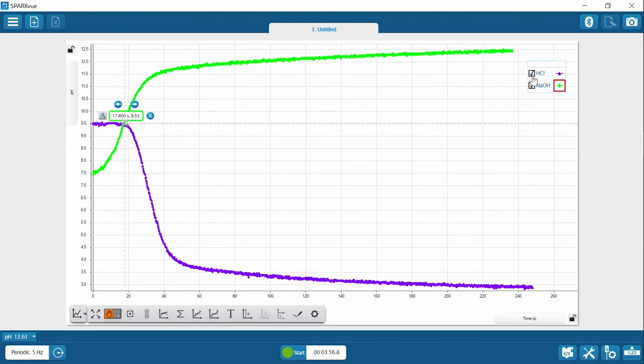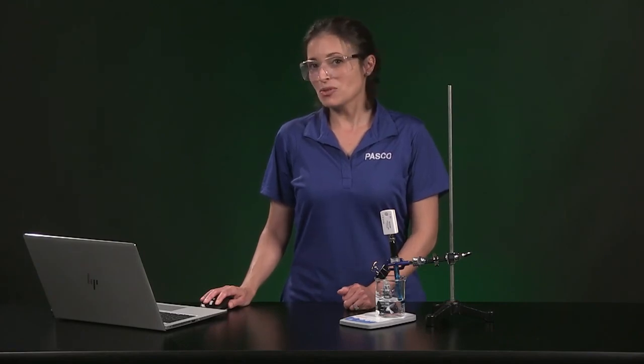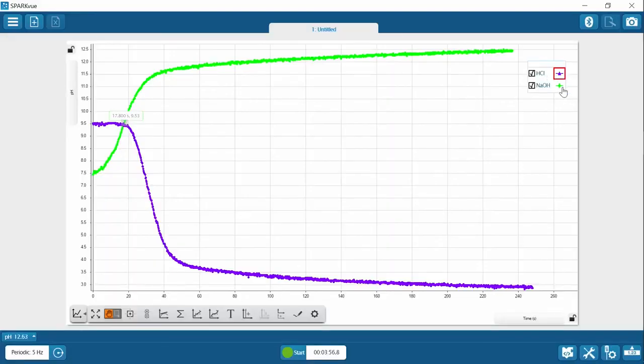Notice how both runs are checked in the legend. I can hide or make a run visible by checking the box. If I want to get coordinates for the HCL run, I need to make sure the red box in the legend is on that run. When you use any of the SparkView tools, make sure the red box is on the run you are interested in.